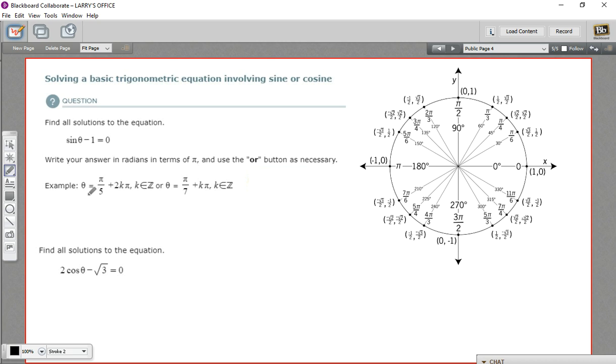They give us an example down here: theta equals pi over 5 plus 2k pi. And then this weird thing, k, some weird-looking e thing, some weird-looking z thing. All this stuff means is that every multiple of 2 pi - k and this e and this z, z means is an element of, the e means is an element of, and z means integers. So it's just saying k is an integer, so any integer times 2 pi.